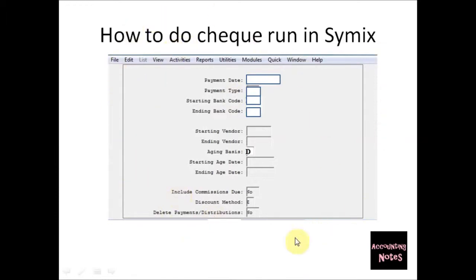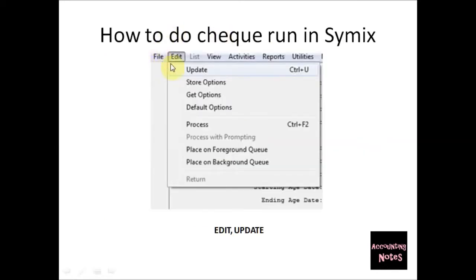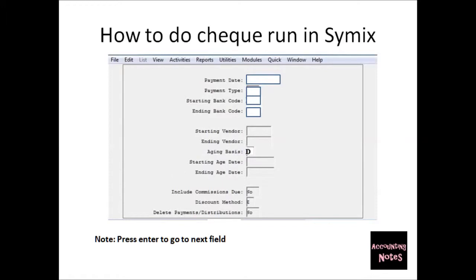In order to do an update, you'll have to go to Edit on the toolbar and click Update. In this window we need to update the fields in order to do the check run. The first field says Payment Date — this is the date you are physically on, which will be today's date, whenever you're doing the check run.